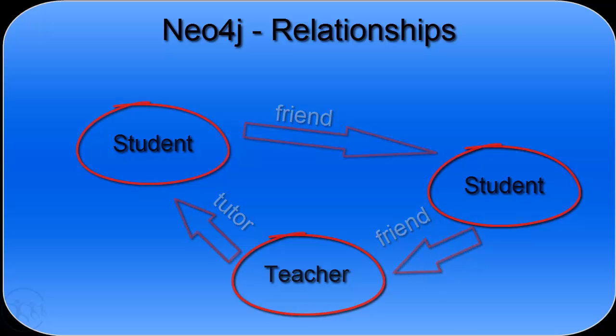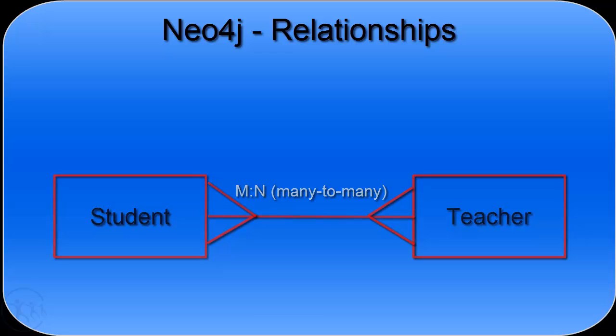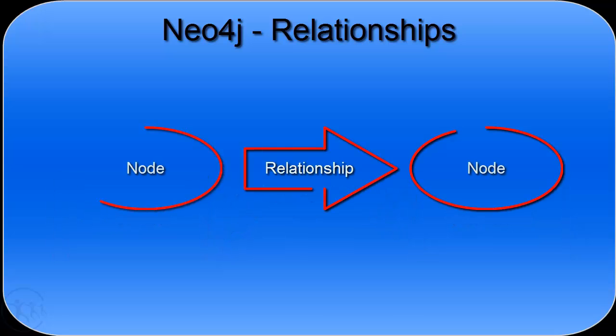Traditionally in relational databases, relationships have been modeled with arbitrary IDs and foreign keys posted into different tables. With a graph database, a relationship is a first-class citizen — meaning it's just as valid and just as important as a node. Nodes and relationships are the building blocks of a graph database, and relationships should be seen as no less important than nodes.